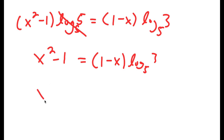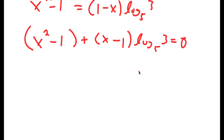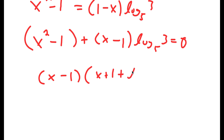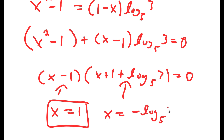This means x squared minus 1 plus x minus 1 times log base 5 of 3 is equal to 0. This factors to x minus 1 times x plus 1 plus log base 5 of 3 equals 0. So x minus 1 equals 0 gives x equals 1, and solving the other factor gives x equals negative log base 5 of 15.